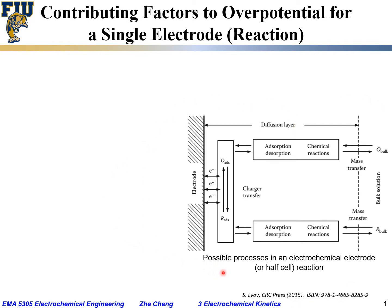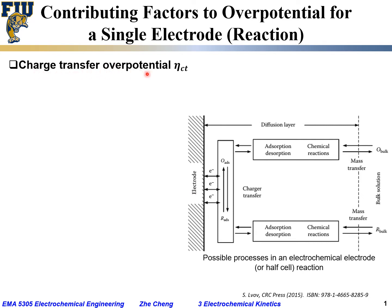Here we have a schematic that illustrates different processes in an electrochemical electrode — or what people call a half-cell reaction. The left side would be the electrode, which conducts primarily electrons. The right side from here to here would be the electrolyte, which could be a liquid electrolyte, or could be a solid electrolyte, but with other species.